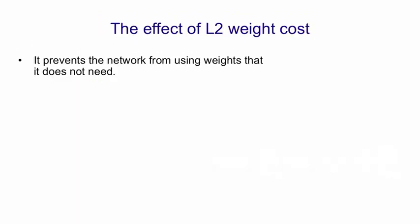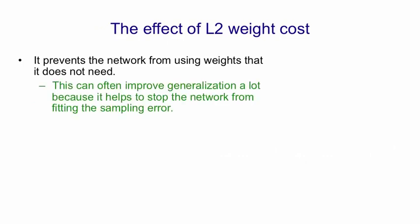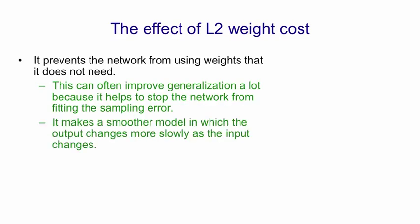The effect of an L2 penalty on the weights is to prevent the network from using weights that it doesn't need. This often improves generalization a lot because it can use those weights that it doesn't really need to fit the sampling error. It also makes a smoother model in which the output changes more slowly as the input changes.